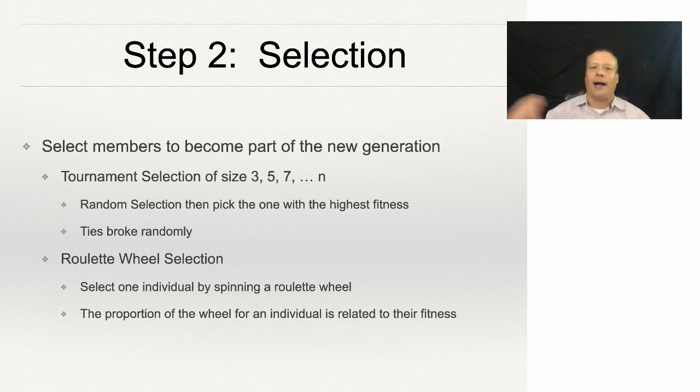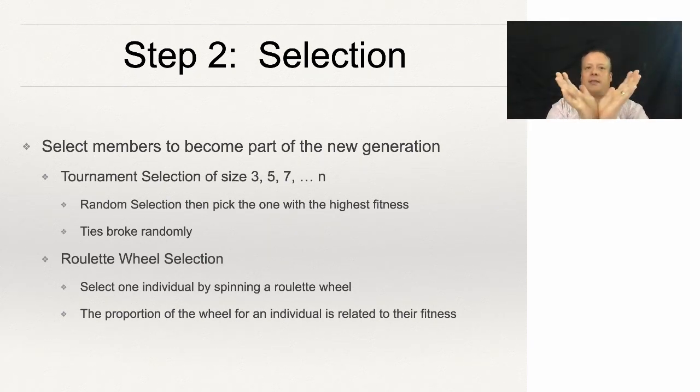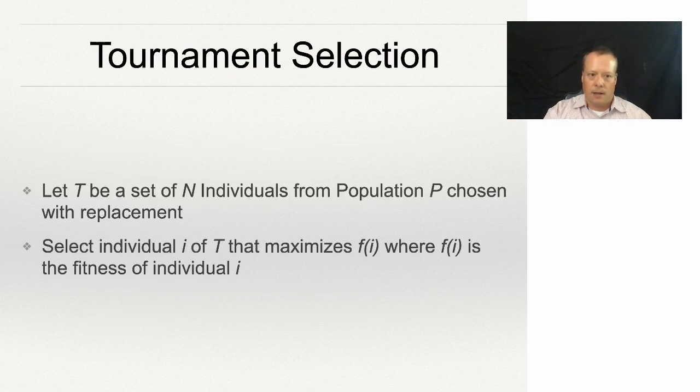The other way is roulette wheel selection. In roulette wheel selection we build a roulette wheel where the parts of the wheel—the slices of the pie of that wheel—is the size proportionately of the fitness of that individual. Then we spin the wheel and we choose one, and that's the one we see coming up that we choose to propagate to the next generation.